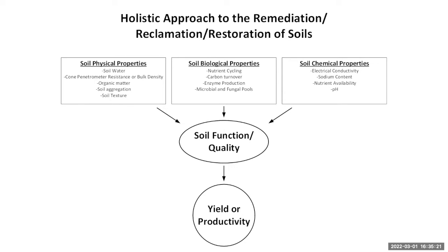One of the things we try to think about is the end product — the landowner, the land use, soil function. A lot of these things need to be incorporated into our remediation and reclamation, because things that happen on the front end will have long-term consequences for the landowner down the road. Physical properties, biological properties, chemical properties — all of these need to be thought about before you can think about soil function and quality. Soil health is a word that gets used a lot too, whether it's rangeland productivity or crop yield.